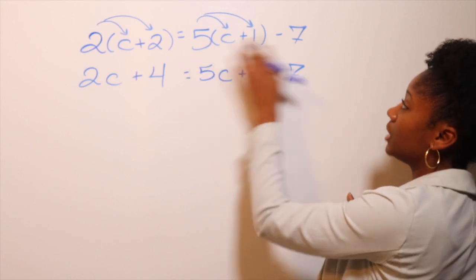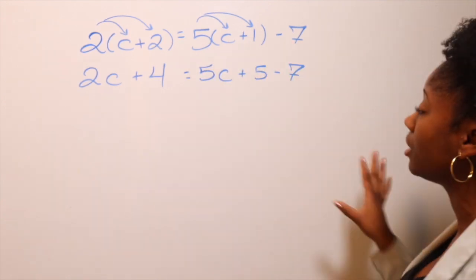And then negative 7. We do not times the 5 by negative 7 because it's not a bracket.